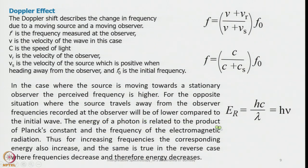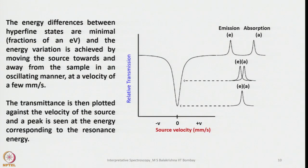The energy of a photon is related to the product of Planck's constant and the frequency: E = hν = hc/λ. For increasing frequencies, the corresponding energy also increases, and vice versa. The energy difference between hyperfine states is minimal, and the energy variation is achieved by moving the source towards and away from the sample in an oscillating manner at a velocity of a few millimeters per second. The transmission is then plotted against the velocity of the source and a peak is seen at the energy corresponding to the resonance energy.